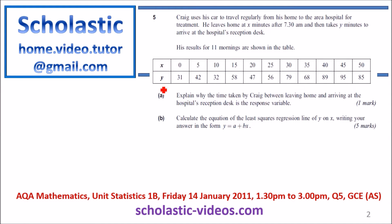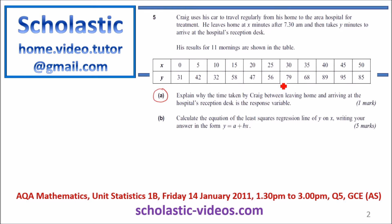Question No. 5, Part A asks us to explain why the time taken by Greg between leaving home and arriving at the hospital's reception desk is the response variable. If you look at the question, X is the time that he left home, and depending on the time he left home, Y varies.